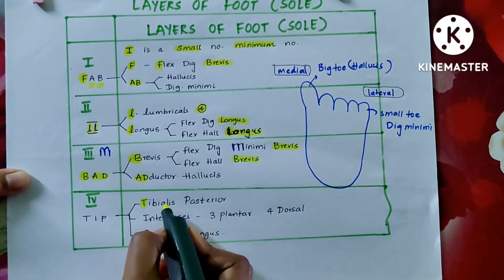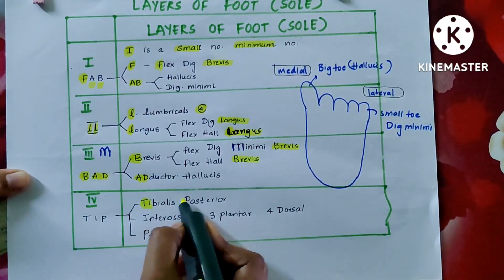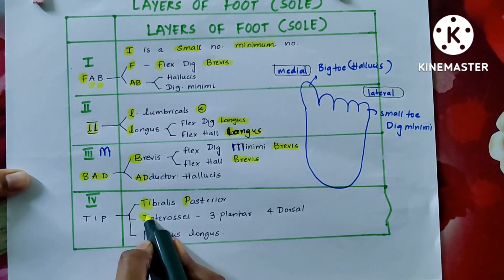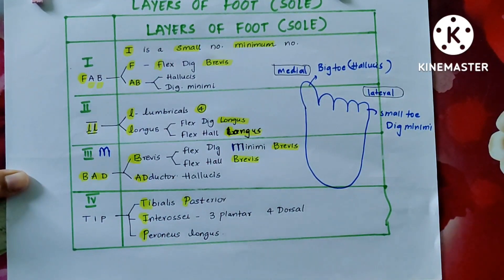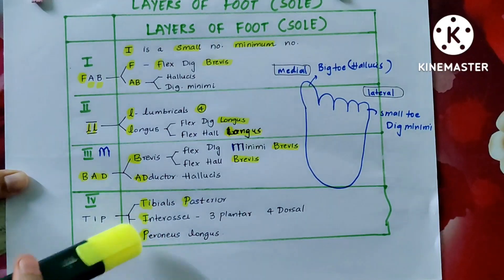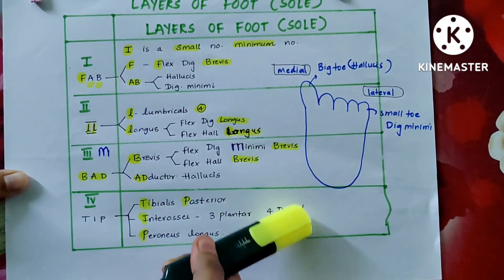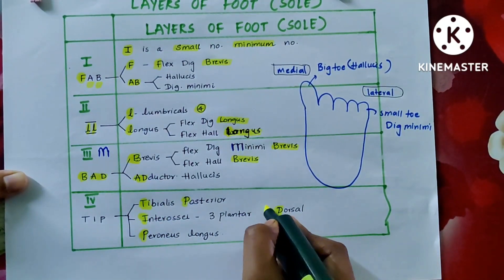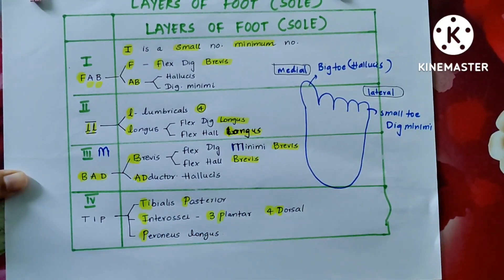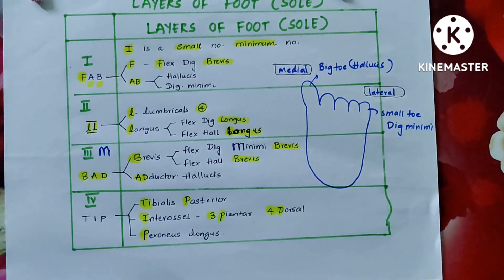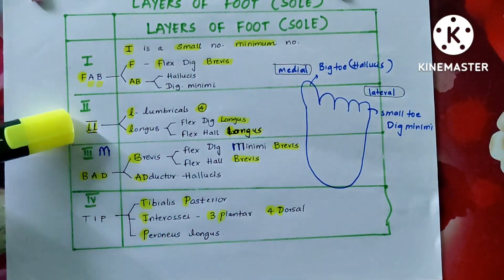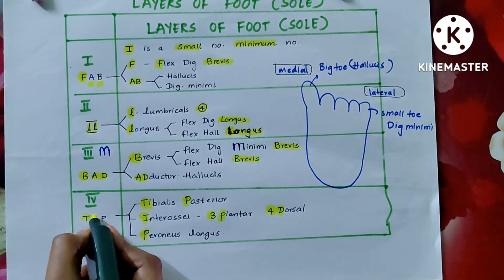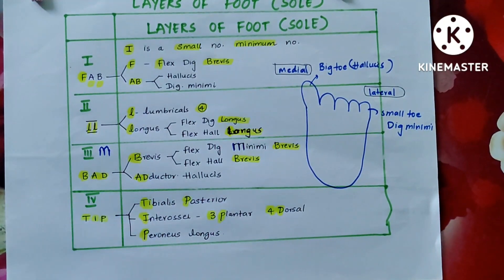Coming to the fourth layer, the mnemonic is TIP: T is tibialis posterior, I is interossei, and P is peroneus longus. There are three plantar interossei and four dorsal interossei — D is the fourth letter, so there are four dorsal interossei and three plantar interossei.